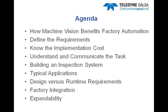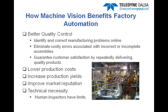Most machine vision systems are used to improve quality control of the manufacturing process. By identifying manufacturing problems online and in real time, these systems can eliminate costly errors. Fewer errors mean higher production yields and lower costs. The higher quality product will improve the company's reputation in the marketplace. In some cases, it's technically impossible to inspect products — small parts, high-speed applications, and dangerous environments are all possible reasons for applying machine vision in place of limited human inspection.